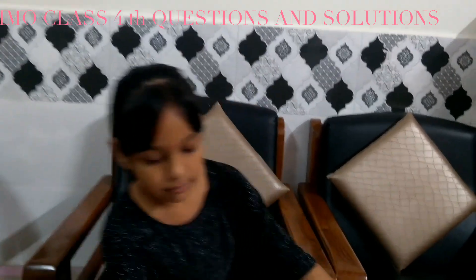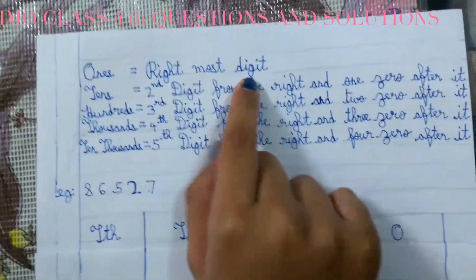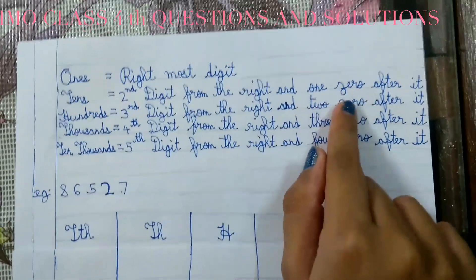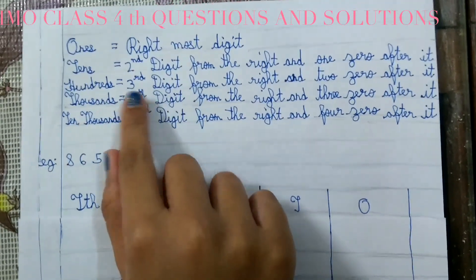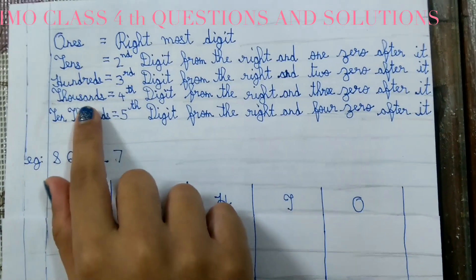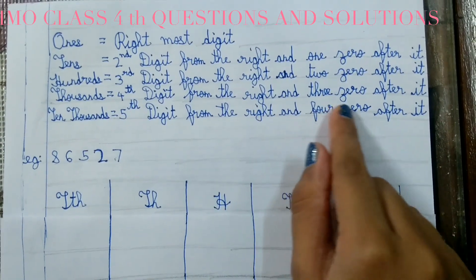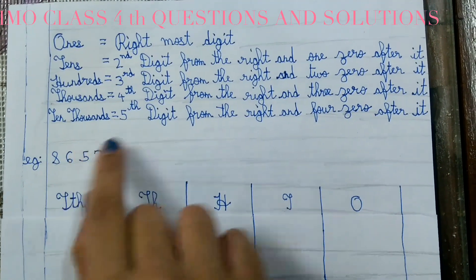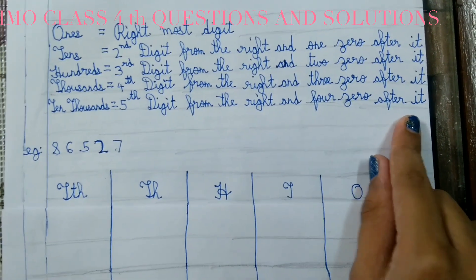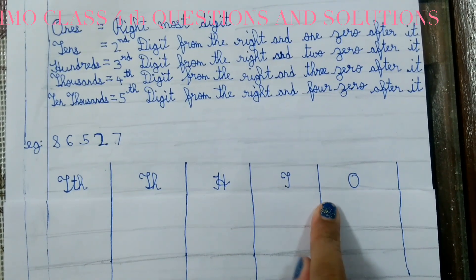Let us see the table first. 1 is equal to the rightmost digit. 10 is the second digit from the right, with one zero after. 100 is equal to the third digit from the right, with two zeros after. 1000 is the fourth digit from the right, with three zeros after. 10,000 is the fifth digit from the right, with four zeros after. So it is 10,000 — 1000 — 100 — 10 — and 1.